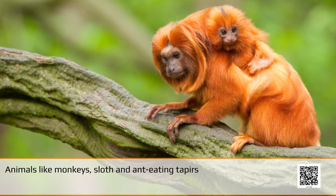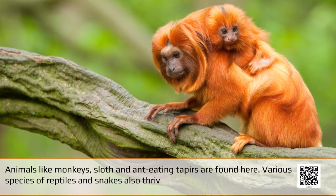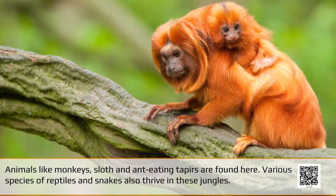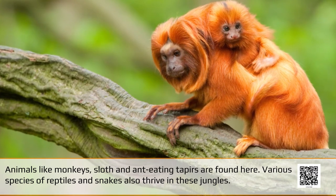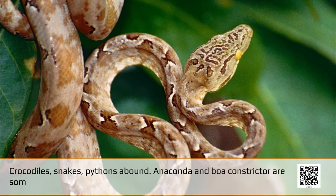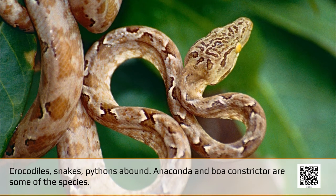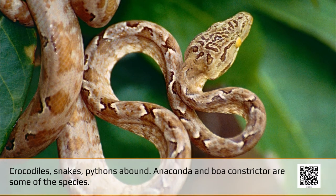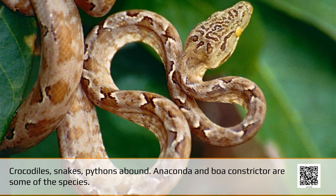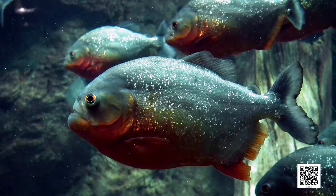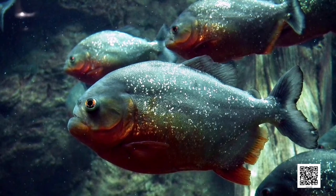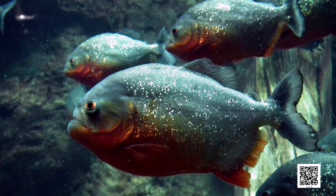Animals like monkeys, sloths, and ant-eating tapirs are found here. Various species of reptiles and snakes also thrive in these jungles. Crocodiles, snakes, and pythons abound here — Anaconda and boa constrictor are some of the species. Besides, the basin is home to thousands of species of insects. Several species of fishes, including the flesh-eating piranha fish, are also found in the river.